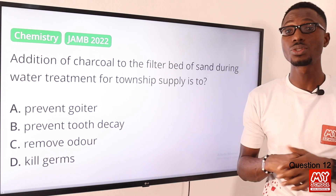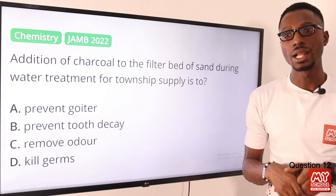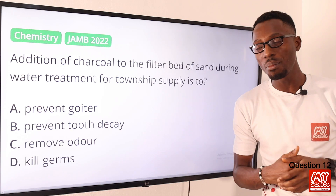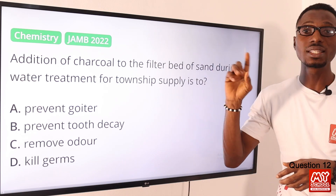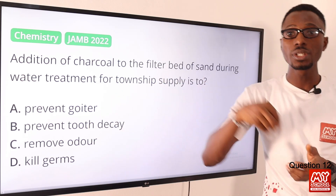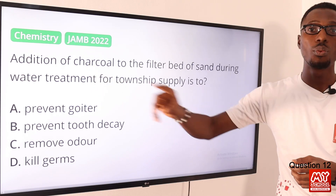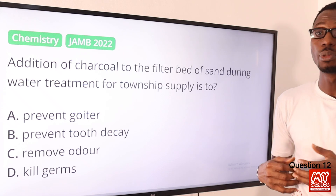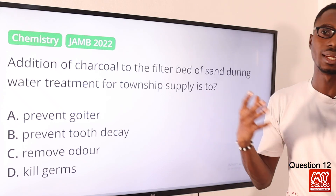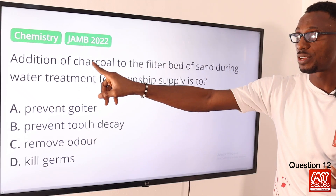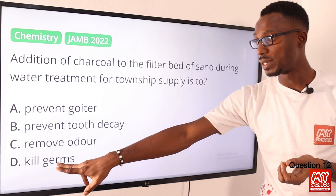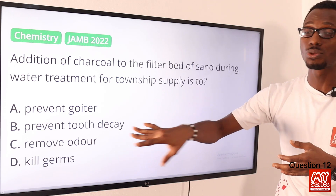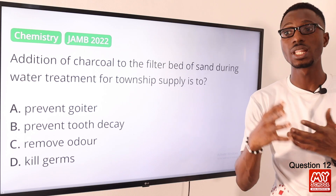Question twelve: addition of charcoal to the filter bed of sand during water treatment for township supply is to do what? In the treatment of water for town supply, you start with aeration and sedimentation, then coagulation where you add a calculated amount of potash alum, forming sediments. Then filtration occurs — fine charcoal is used here. The presence of fine charcoal helps remove fine sediments, smell, and unwanted coloring matters. The correct option is option C.